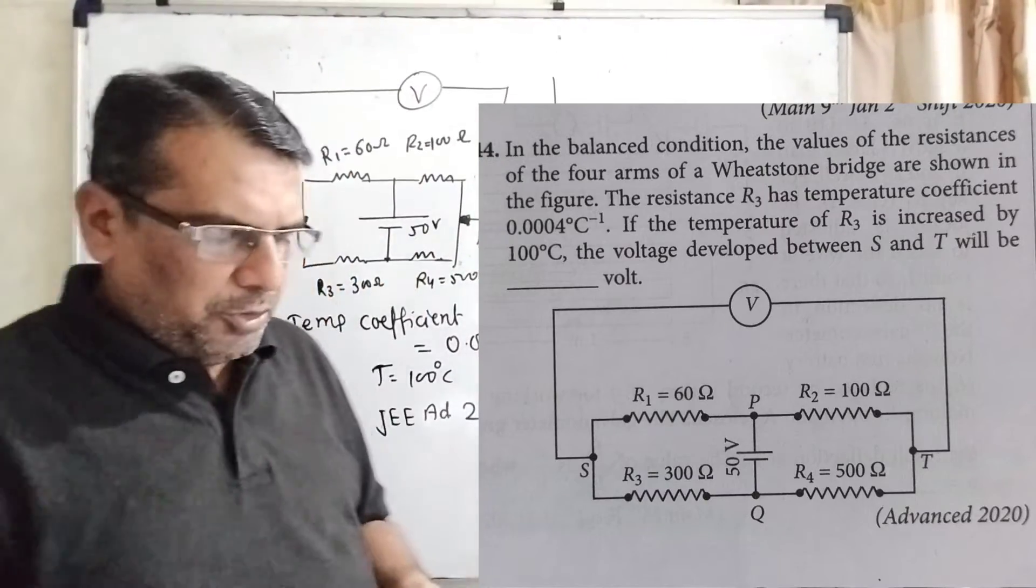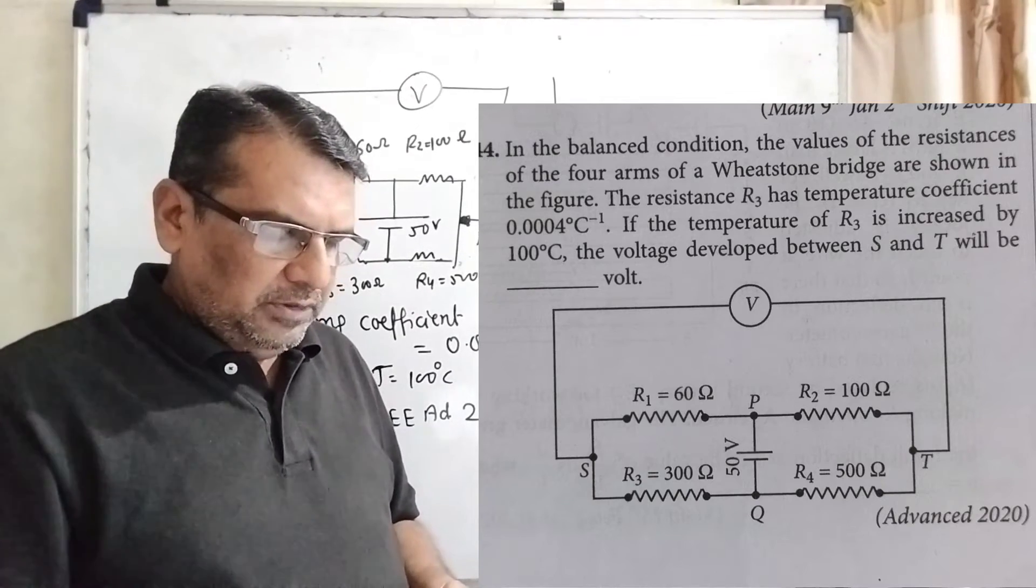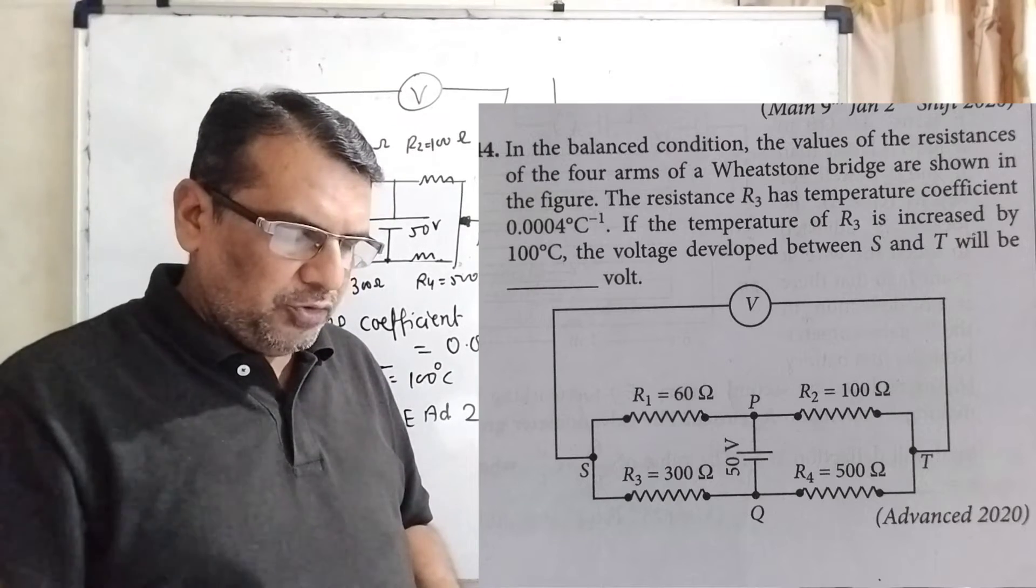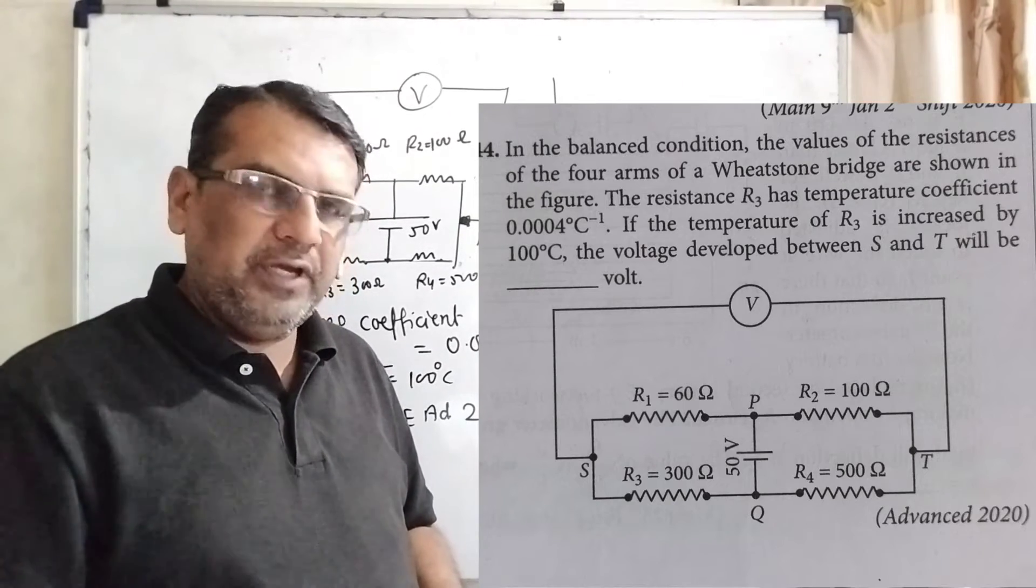Now here is the question. In the balanced condition, the values of the resistances of the four arms of a Wheatstone bridge are shown in the figure.